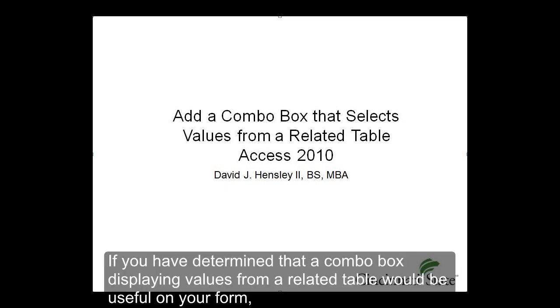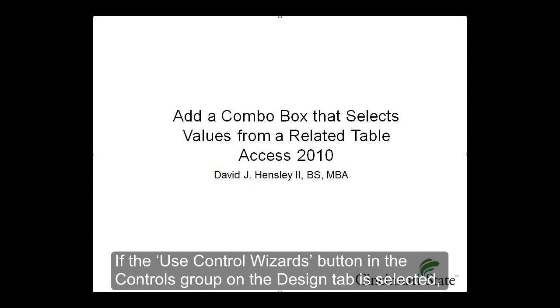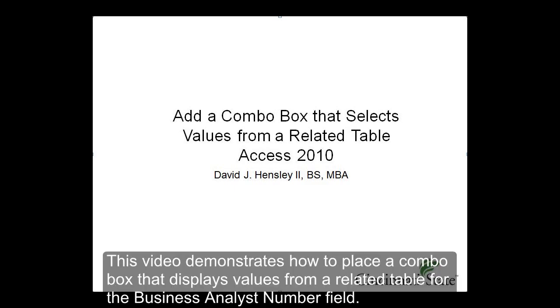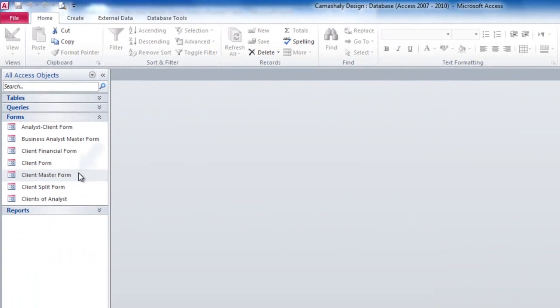If you have determined that a combo box is displaying values from a related table and would be useful on your form, you can add the combo box using the Combo Box tool in the Controls group on the Design tab. If the Use Control Wizards button is selected, you can use a wizard to guide you through the process. This video demonstrates how to place a combo box that displays values from a related table for the Business Analyst Number field.